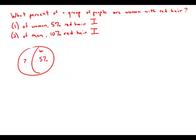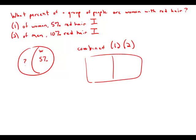Well now combine them, combine statement number one and statement number two. Now we know that the women in the group have five percent red hair, the men in the group have ten percent red hair. Well these percents are not equal, and so the percent in the group would depend on the ratio of men to women.